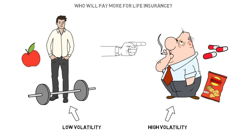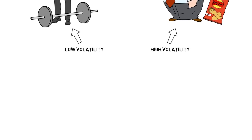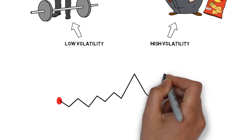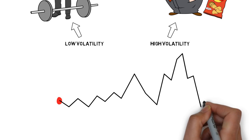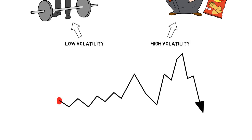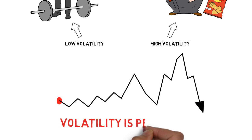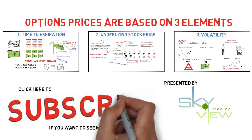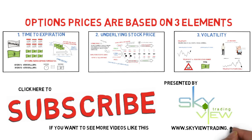Different stocks have different volatilities, and volatility is something that moves around — a stock with low volatility now might have high volatility in the future. Volatility is much more predictable than stock prices, so if you're trading options, it's important to position yourself on the right side of volatility. This is the backbone of my trading strategy, which you'll learn about in the next few videos. The combination of these three elements — time to expiration, strike price, and volatility — is what determines option prices.